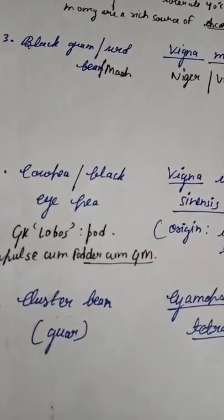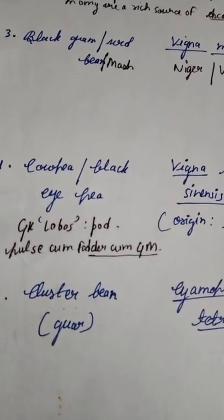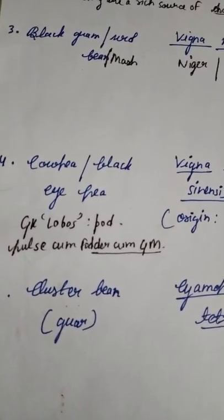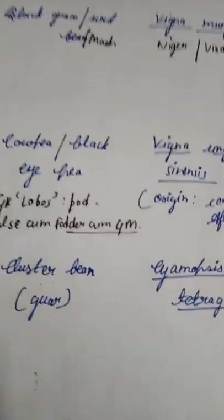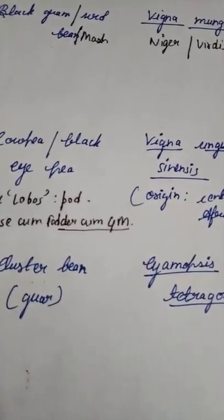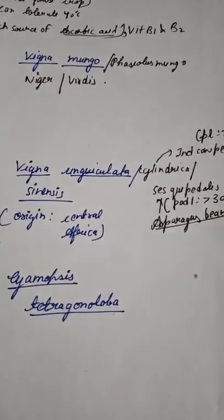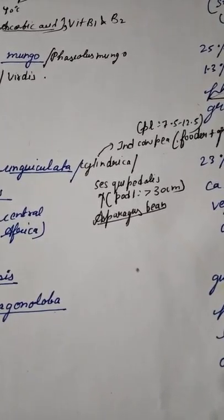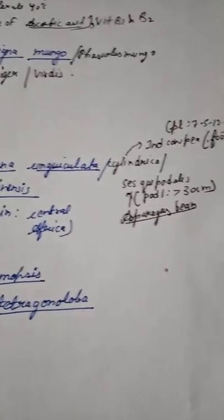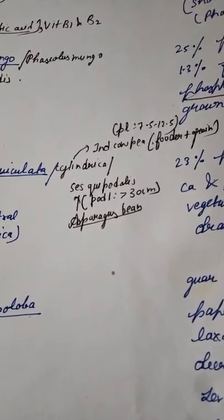Cow pea is also known as black eye pea. It derives from the Greek word 'lobos' which means pod. Cow pea is a pulse-cum-fodder-cum-green manure crop. The origin of cow pea is Central Africa. Vigna unguiculata sinensis and Vigna unguiculata cylindrica are two types of cow pea. The cylindrica species is Indian cow pea, used as fodder and grain.